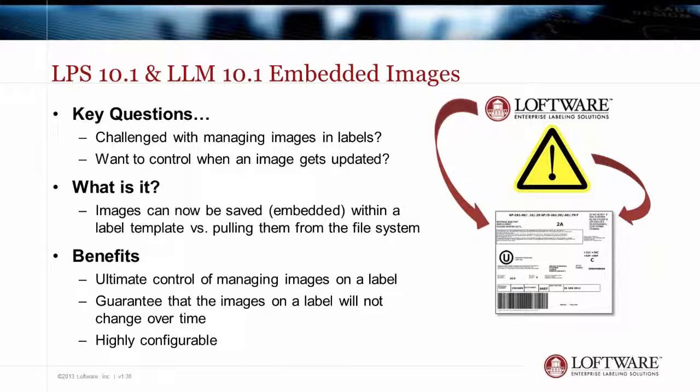What embedded images are — also called saved images — is that we can actually save the image within the specific label template, versus pulling them from the file system. This allows you to have ultimate control over managing images on your label, and you can guarantee that the image you are printing will not change over time. It becomes literally a fixed object within that label.